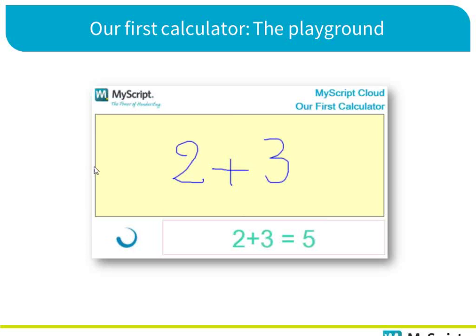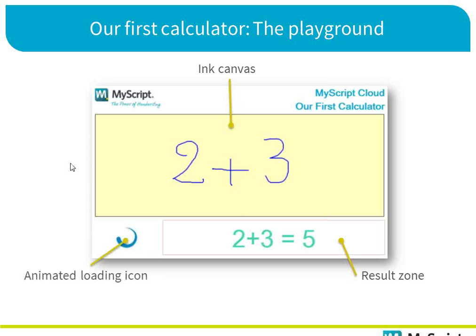So this calculator is made of several parts. The input canvas — an HTML canvas — we use to write on. We have a result zone where we'll see the result appearing, and a small animated GIF icon showing the process underway. We're using today the MyScript cloud, using the server we have online, but you could do the exact same application using an offline SDK or some widgets we also provide.